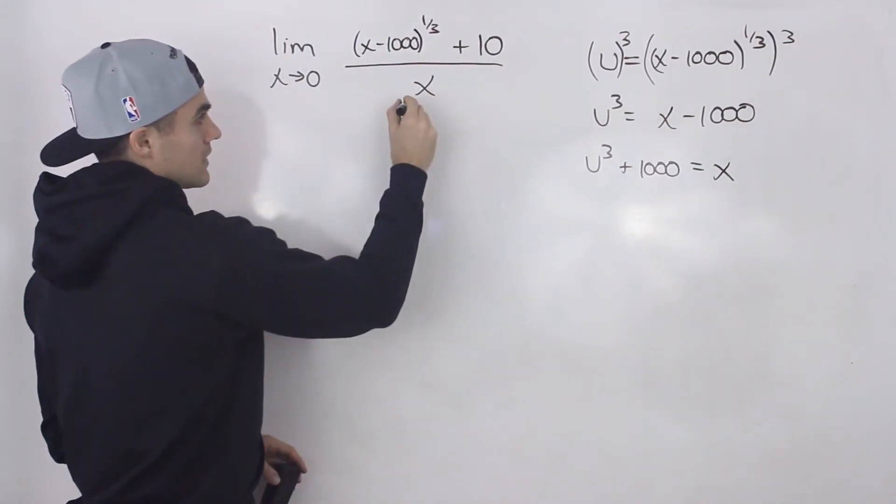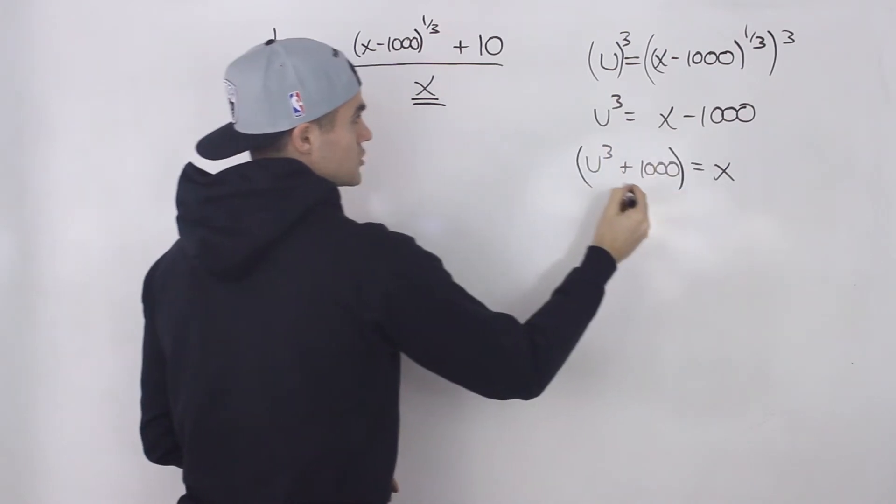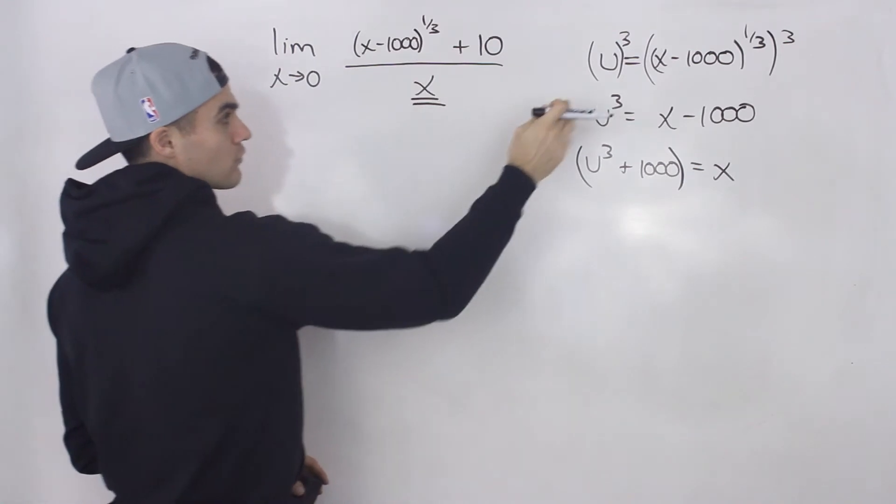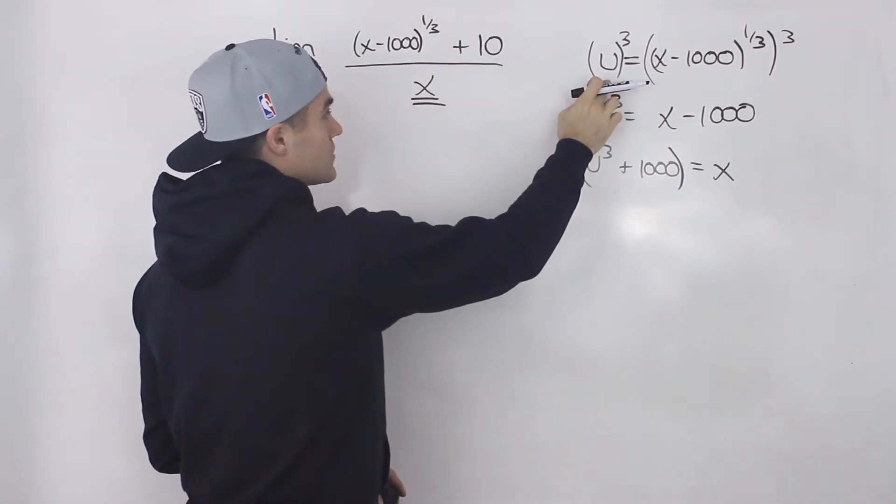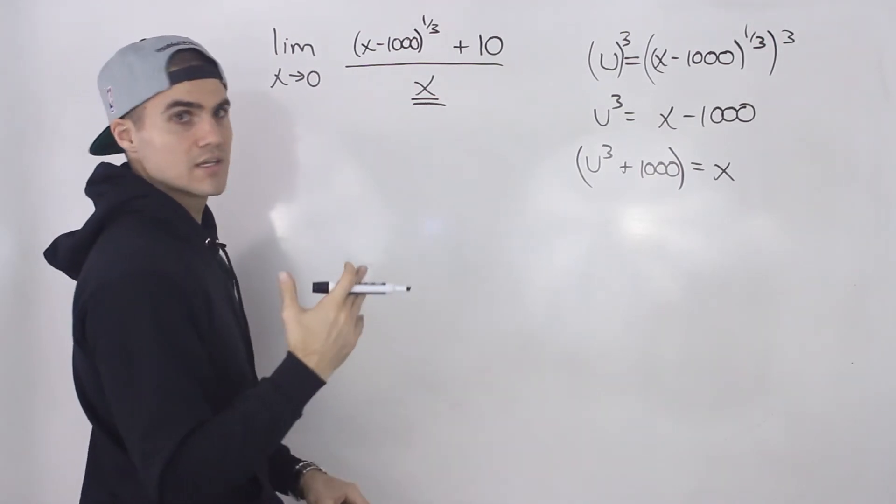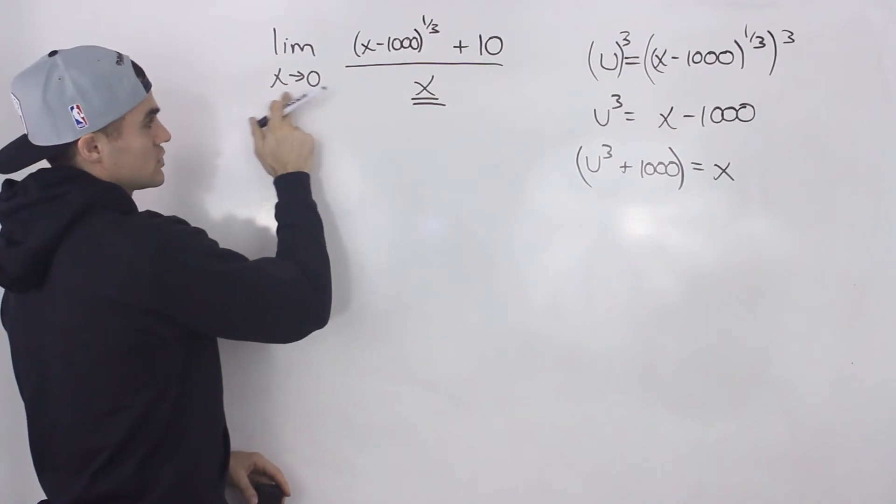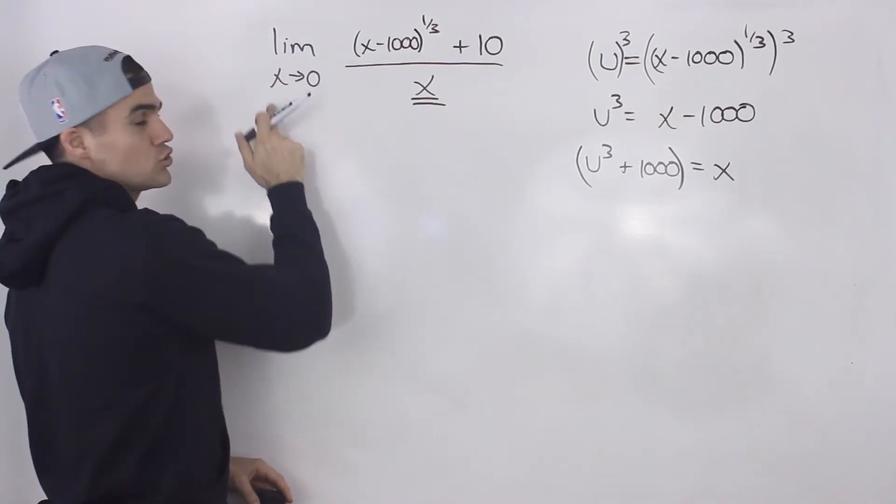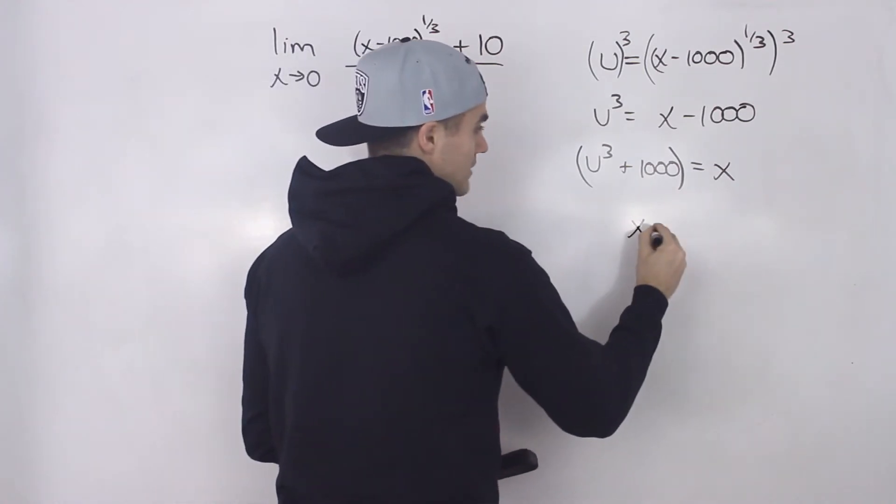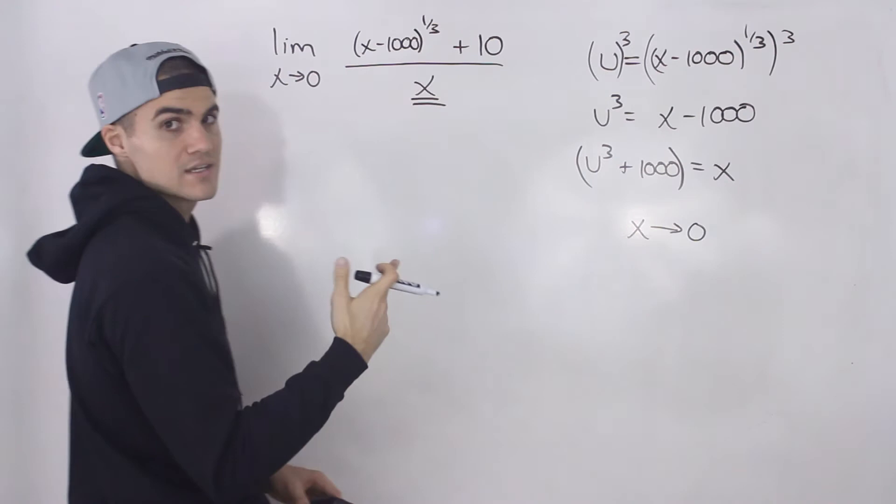Now notice we can make a substitution for this x here with this expression, and for x minus 1,000 to the power of 1 over 3 with just u. However, if our new limit is going to be in terms of u, then this is going to change as well—we have to have the limit as u approaches a certain number. Well, if x is approaching 0, then what is u approaching?